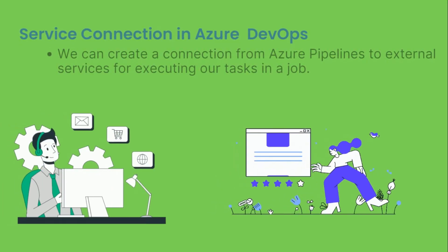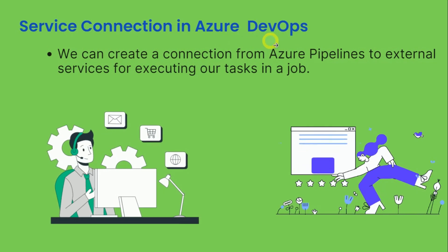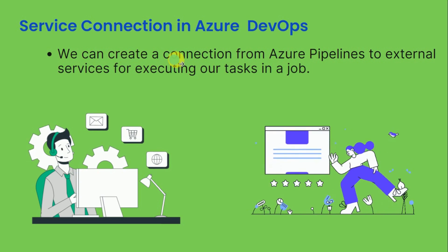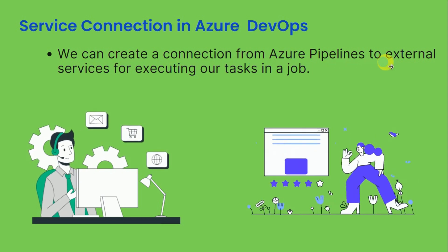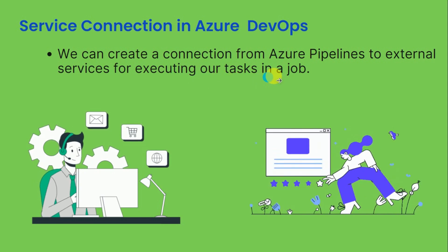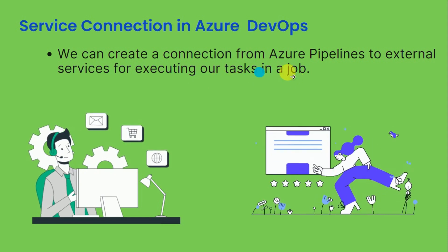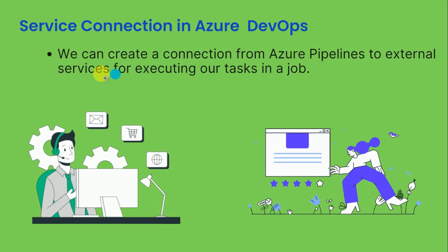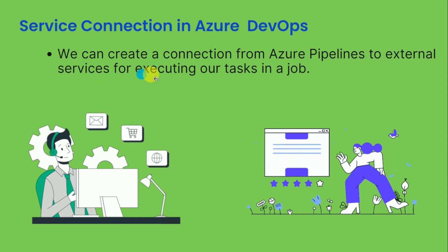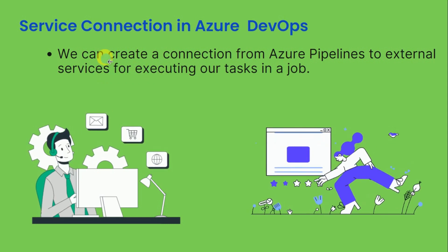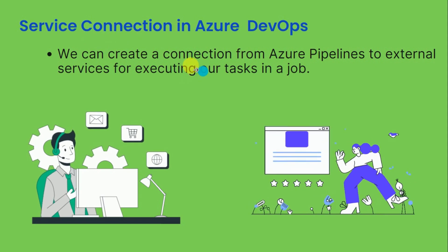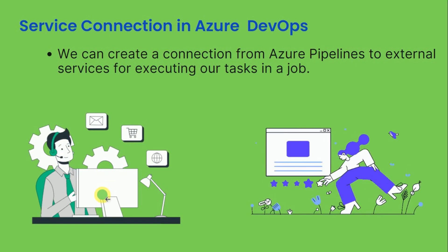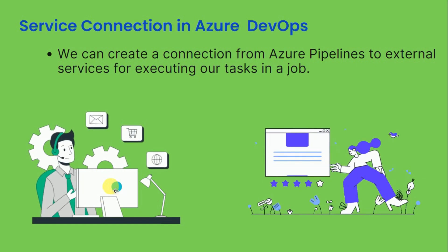Now, first let's understand the service connection in Azure DevOps. We can create a service connection from Azure Pipelines to external services for executing our tasks in a job. In pipelines we have multiple tasks for a job, and we want some external service to execute those tasks for us. In that situation we use service connections. Our intention is to create the service connection on the Azure DevOps system where we are creating the pipelines.